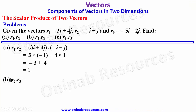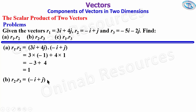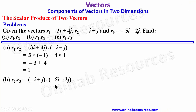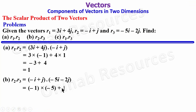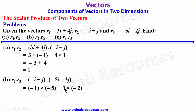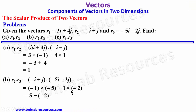For r2 · r3: (-i + j) · (-5i - 2j). Multiplying component-wise: (-1)(-5) + (1)(-2) = 5 + (-2) = 3. The dot product of r2 and r3 is 3.